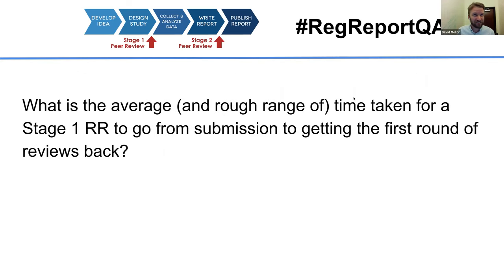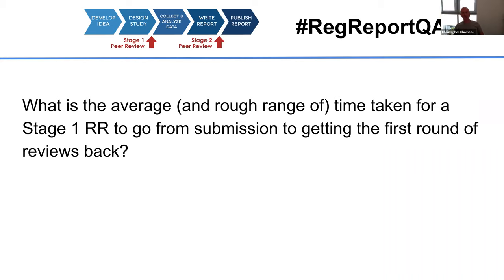These next questions came from one single lab and their colleagues, so some will be pretty similar. What's the average or rough range of time taken for a stage one registered report to go from submission to getting the first round of reviews back? This is a good question — I don't get this one very often. I often get the one about how long before the final decision, not the first round of reviews. Looking at some statistics, it's a little bit tricky to tell because when you submit to a journal, it doesn't always go to the editor immediately.